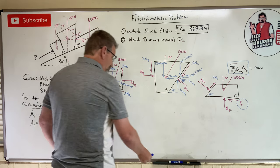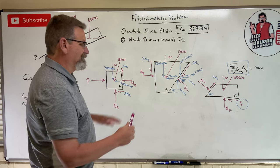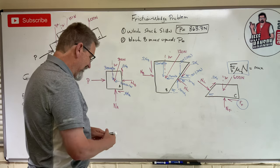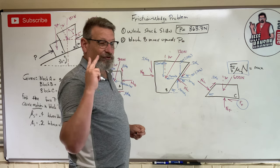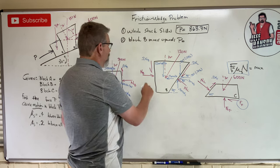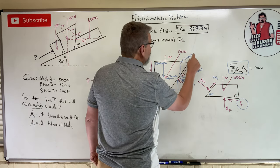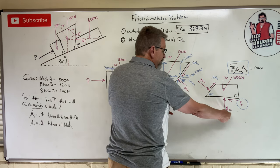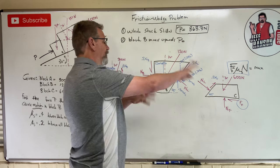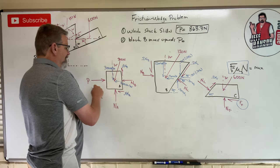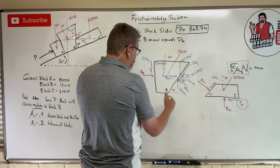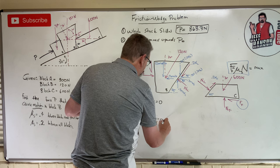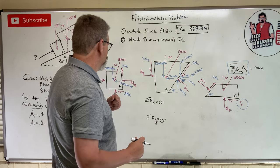We start with a free body that has only two unknowns. Block B has Nb and Nc — that's it. Block C has Nf, Ff, and Nc — three unknowns, no good. Block A has Na, Nb, and P — three unknowns, no good. So we start with block B.